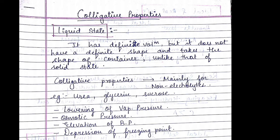Today we are going to see what are the colligative properties. Colligative properties are shown by liquid solutions. The solution which has definite volume but does not have definite shape are known as liquid solutions.